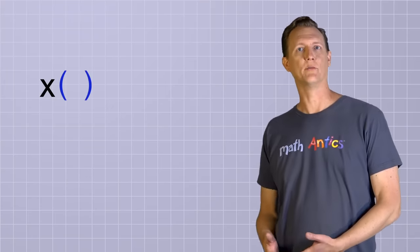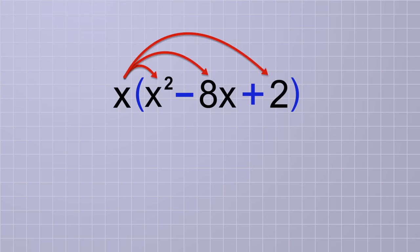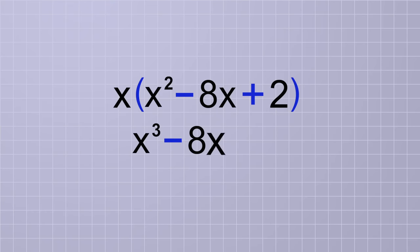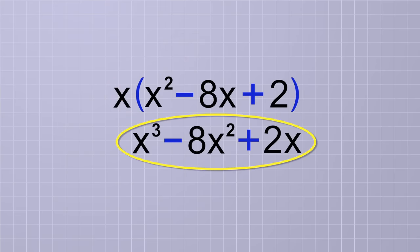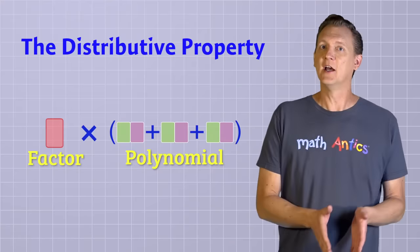Let's see another example: x times the group x squared minus 8x plus 2. In this expression, the factor being multiplied by the group is actually a variable, but the distributive property works exactly the same way. The first term is x squared, which is the same as x times x. So if we multiply that by x, we'll get x cubed since that would be 3 x's multiplied together. The next term is negative 8x, so multiplying by x gives us negative 8x squared. Last of all, x times positive 2 is just 2x. So after distributing the factor x, we have the polynomial x cubed minus 8x squared plus 2x.